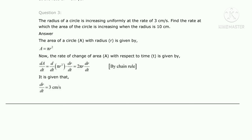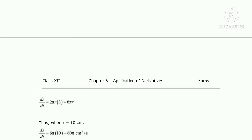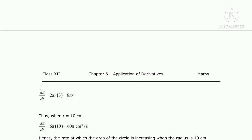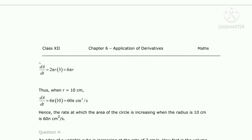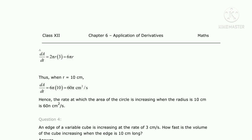Substituting dr/dt equals 3 centimeter per second: dA/dt equals 2πr times 3 equals 6πr. Now the radius is 10 centimeter, so substituting r equals 10: dA/dt equals 60π centimeter square per second. Hence the rate at which the area of the circle is increasing when the radius is 10 centimeter is 60π centimeter square per second.